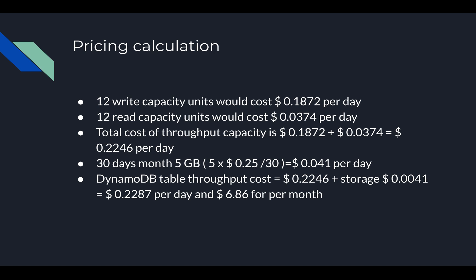We also need to calculate the storage cost. For 5 GB over 30 days: $0.25 multiplied by 5 GB divided by 30 gives a per-day storage charge of $0.041. Adding the throughput and storage costs together gives a total of $0.2287 per day, or approximately $6.86 per month. This is the basic calculation for DynamoDB throughput and storage pricing, which is important to understand.